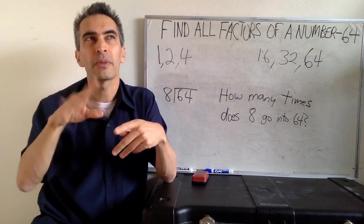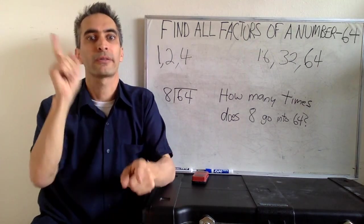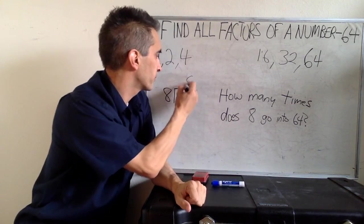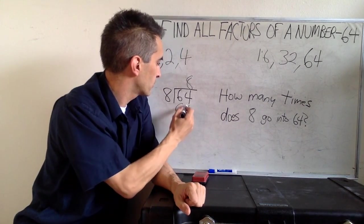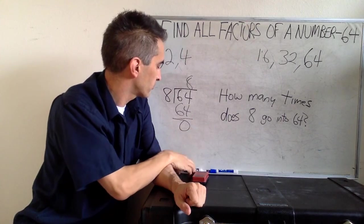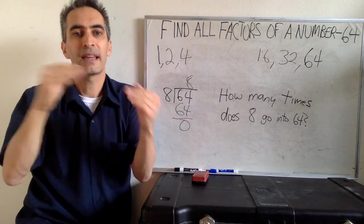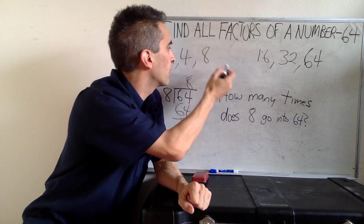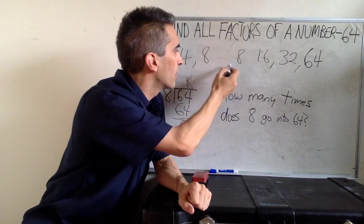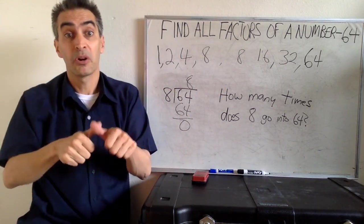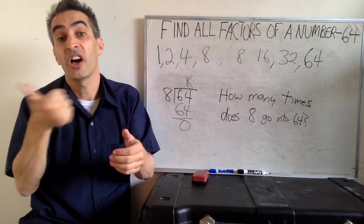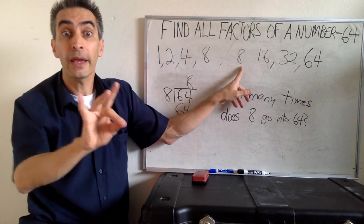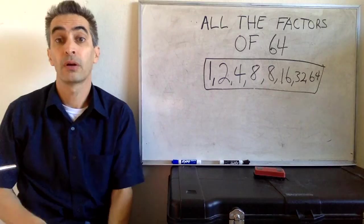Oh, 8 times 8 equals 64. Right. 8 times 8 equals 64. 8 and 8. Oh, that means we're finished.